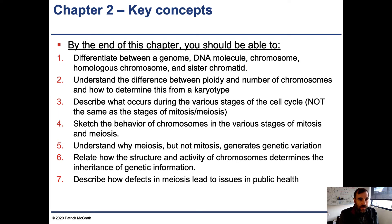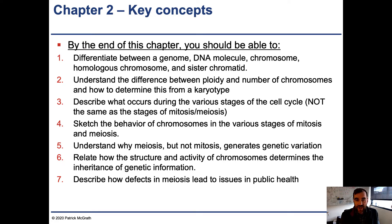By the end of this chapter you should be able to differentiate between the following terms: genome, DNA molecule, chromosome, homologous chromosome, and sister chromatids. There's lots of jargon in biology, so it's important to always understand what is meant by specific terminology. These are the terms from this chapter that are really important, and for the test you should be able to distinguish between all of them.